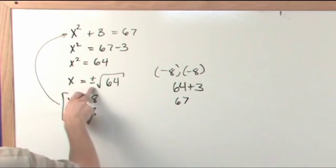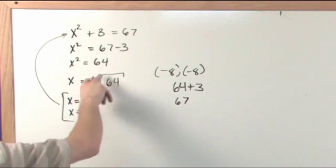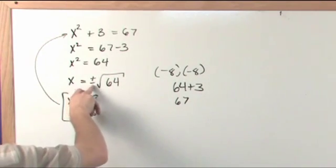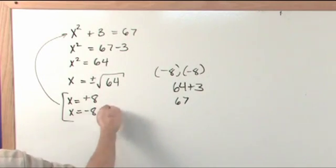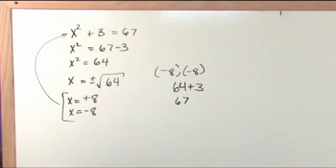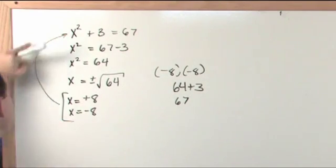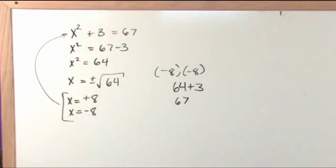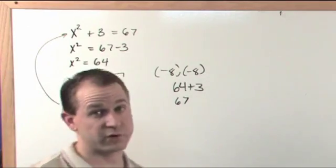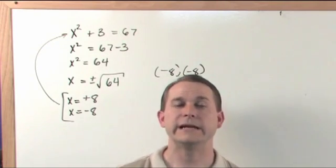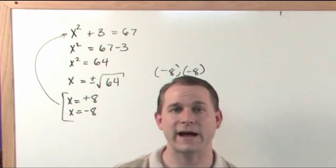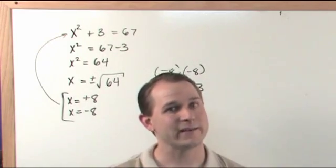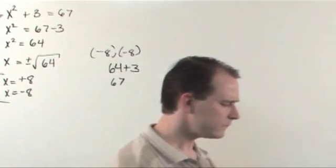That's why you have to put the plus or minus. Anytime you take the square root of something trying to solve an equation, you have to put a plus or minus because either the plus or the minus value will be valid. Even the negative value works because negative times negative gives you positive. The negative value is just as valid as the positive value because when you square it, it doesn't matter if it's negative.